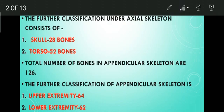Now talking about appendicular skeleton, there are 126 bones present among which upper extremity consists of 64 bones and lower extremity consists of 62 bones.